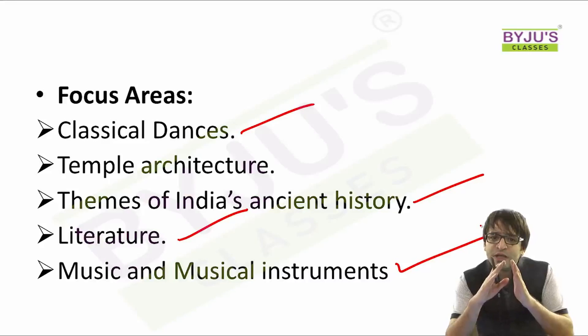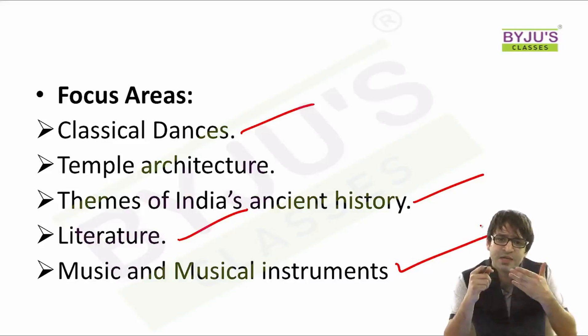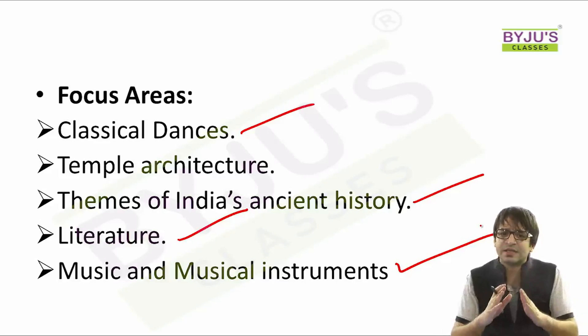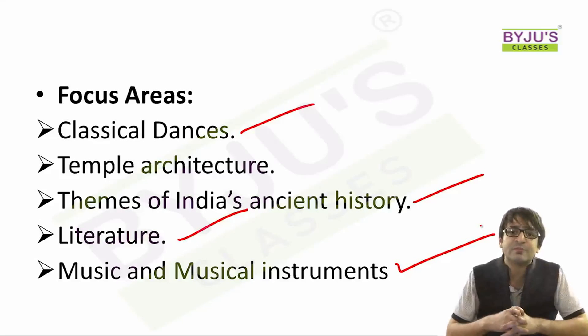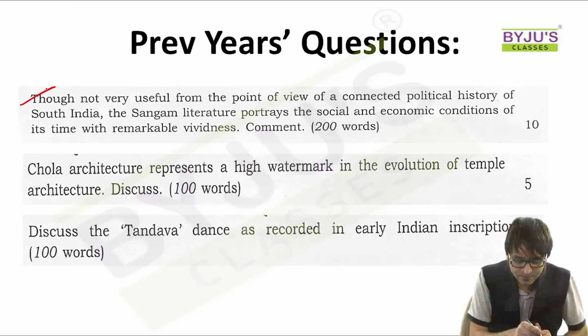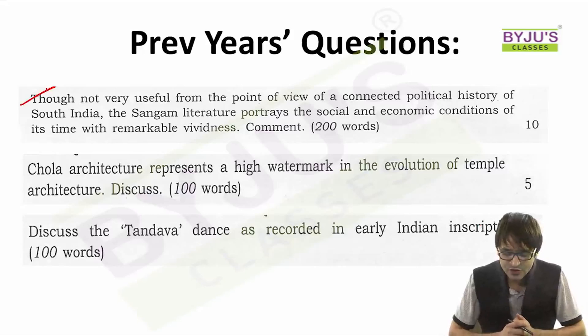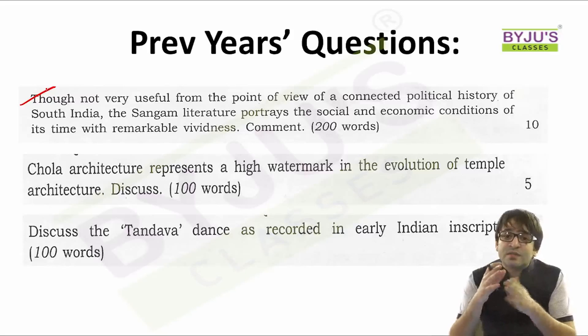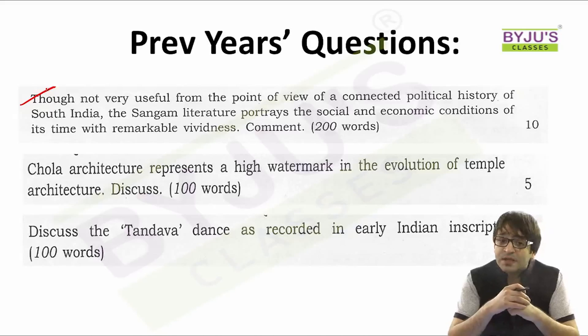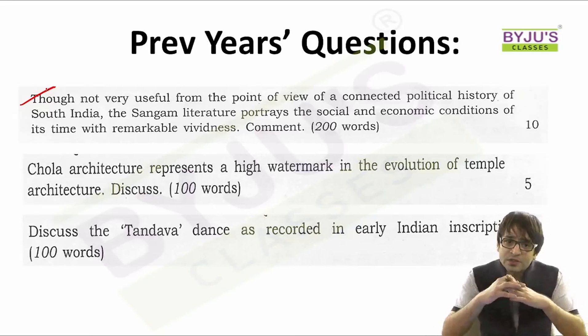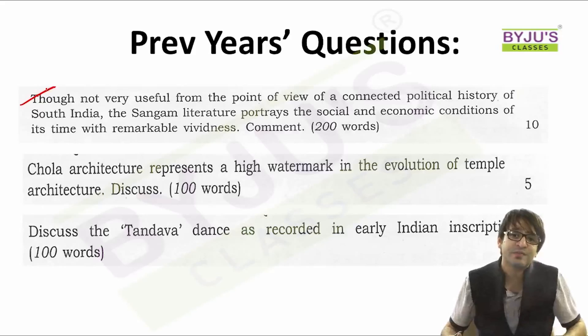If we look at the questions asked over the past many years, we get a clear sense that Indian art and culture is entirely focused on these subjects. For example, a question asked in 2013: 'Though not very useful from the point of view of a connected political history of South India, the Sangam literature portrays the social and economic conditions of its time with remarkable vividness — comment.' This is exactly what was asked in your 2013 mains examination.